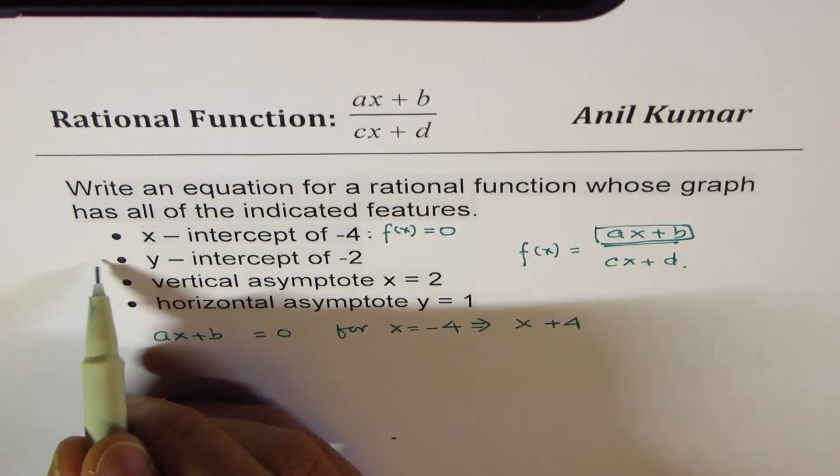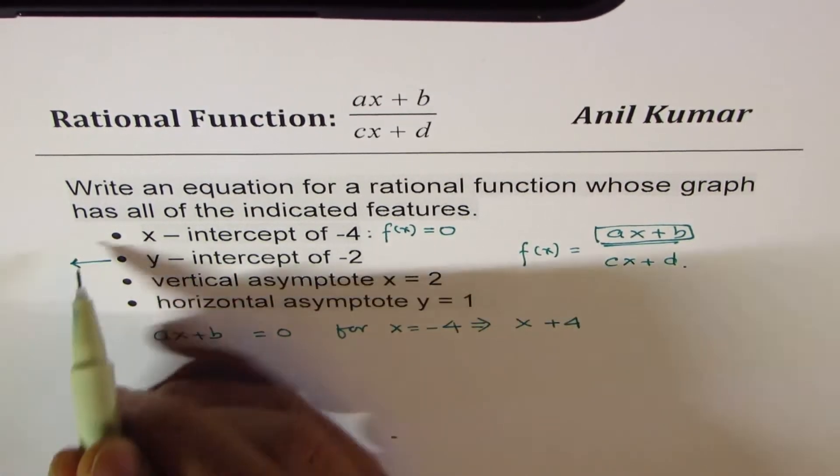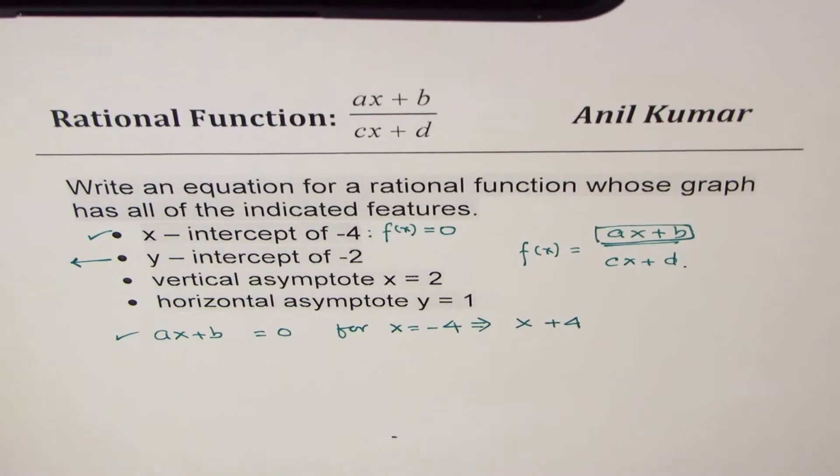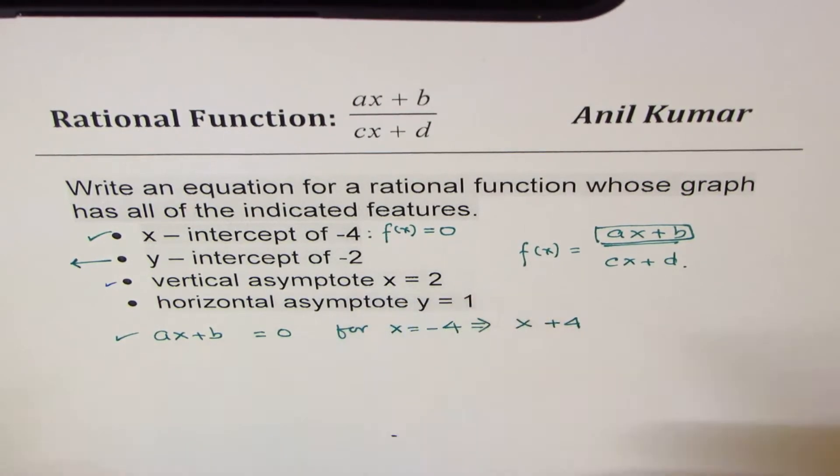Now I will suggest that ignore this y intercept. We will meet the three criteria. So we have done the first one. Let's do the second one. Let's use a different thing. Second one is vertical asymptote of x equals to 2.